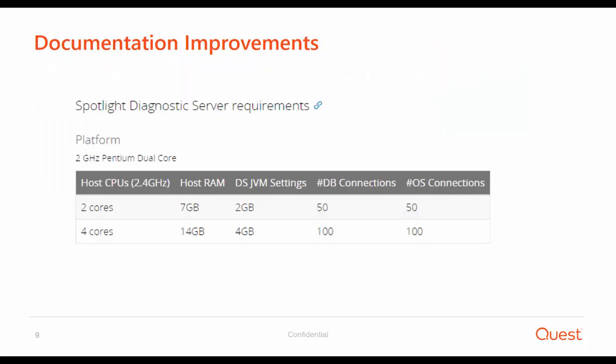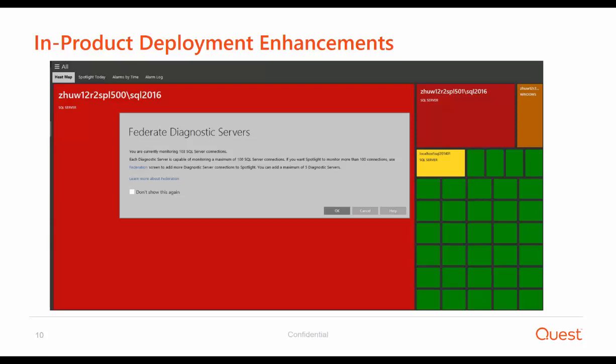We've also simplified our requirements for sizing based on a given amount of monitored instances. Here you can see how many CPU and memory resources are required for up to 50 connections and how many are required for up to 100 connections. As you probably know, there is a limit of 100 SQL Server connections per diagnostic server. Now with this release, we will notify the user if they are trying to monitor more than 100 instances in one diagnostic server, and we will recommend using Federation in order to support large enterprise environments. The goal of this enhancement was to ensure that users meet our deployment requirements, which is important to guarantee optimal performance.